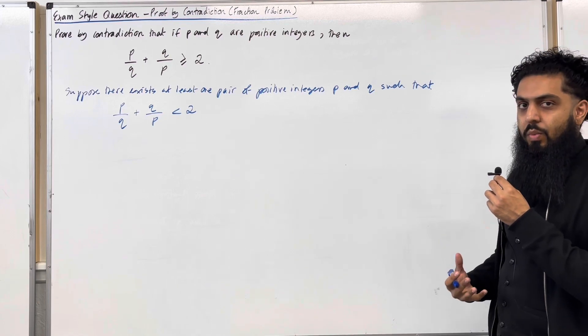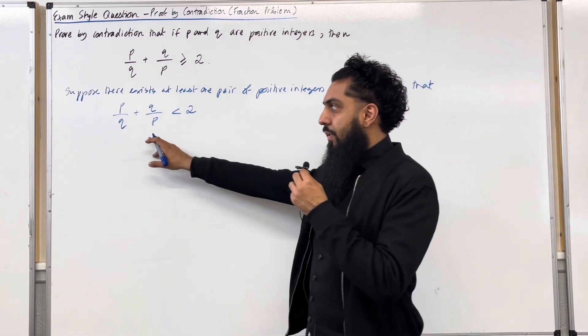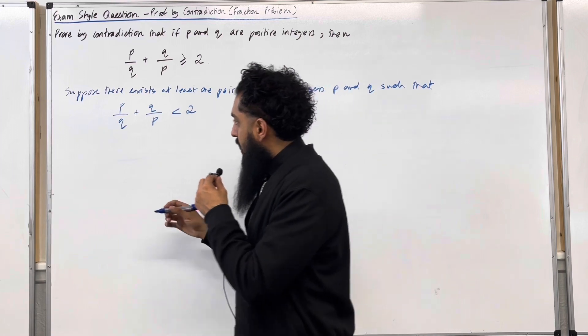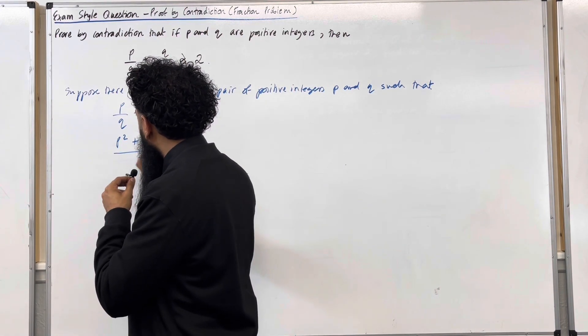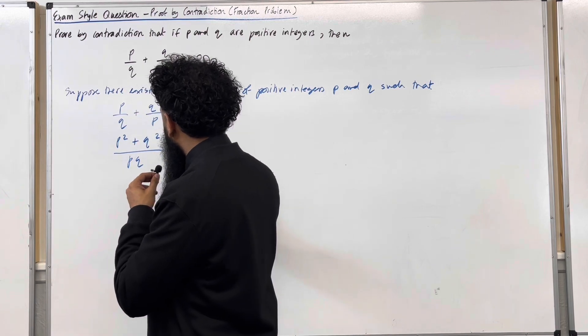So naturally as a mathematician, what I will do next is combine these two fractions by cross-multiplying. This gives me p squared plus q squared all over pq less than 2.